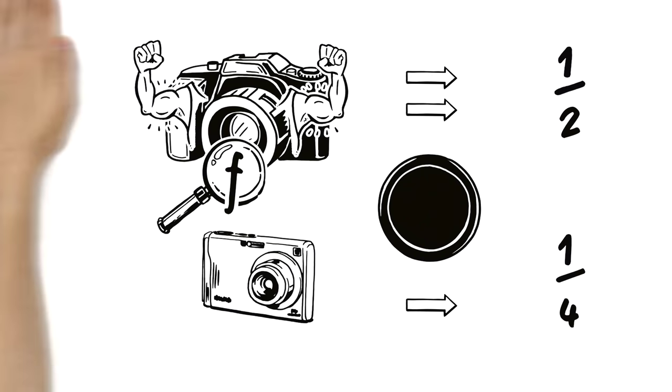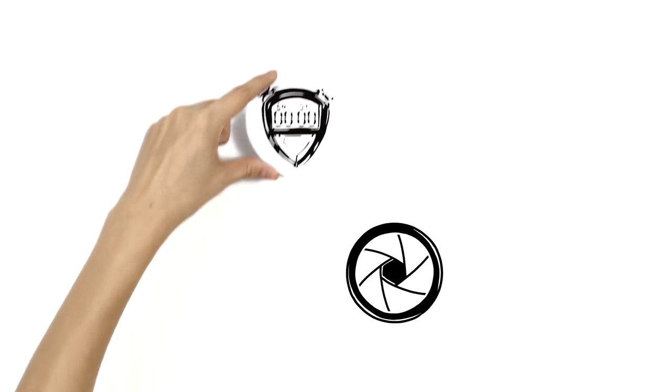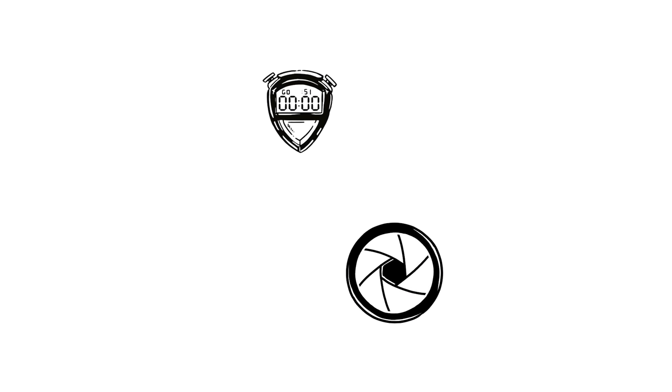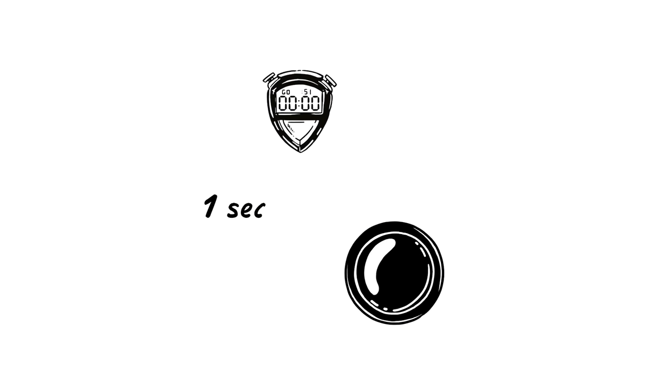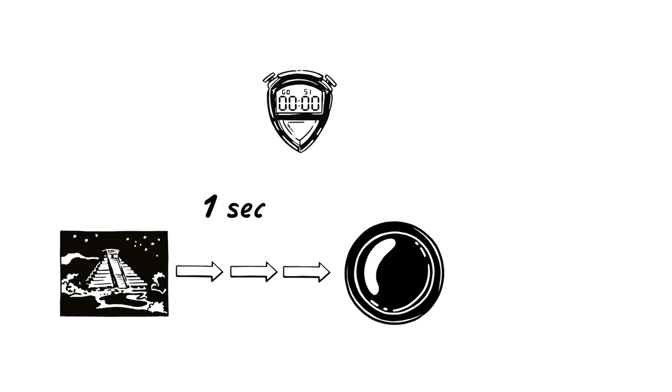But those aperture curtains don't always stay open. They only open for a split second. That length of time is called the exposure time, or shutter speed. The longer the exposure time, the more light enters the photo. That's fantastic if Mary wants to take a photo at twilight, for example.